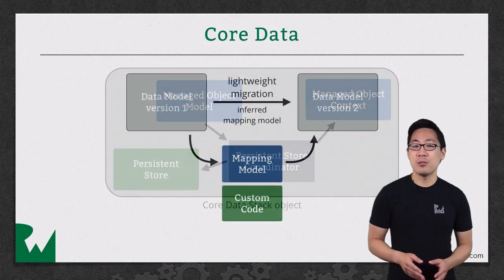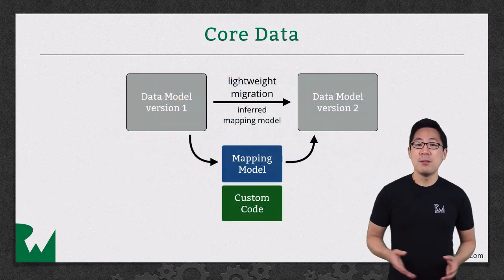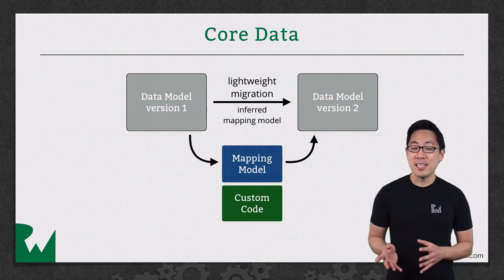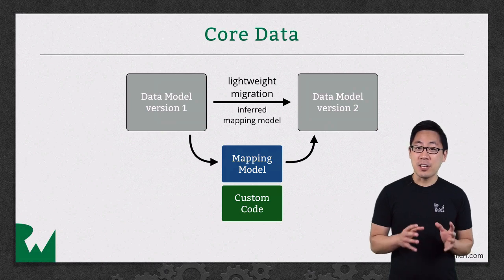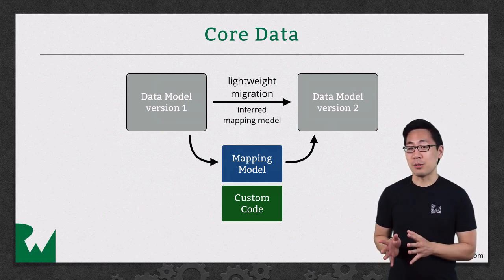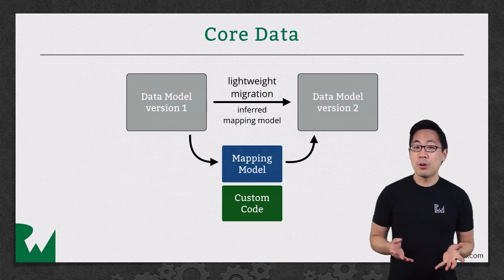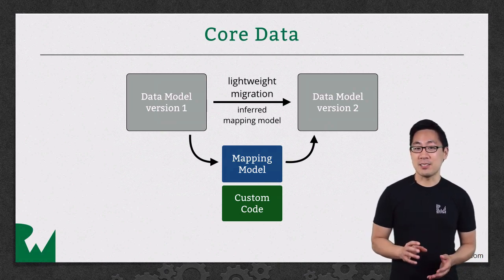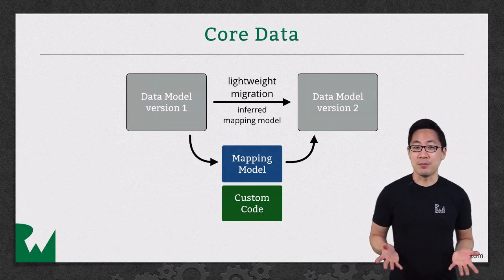You've already used lightweight migrations, which are fully automated, but by learning about mapping models and NSEntityMigrationPolicy subclasses, you can understand the underlying process of how Core Data moves from one model version to another. We overrode the method for phase one of the migration process, but you can override any of the other phases as well.